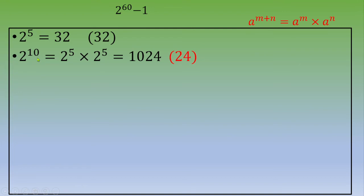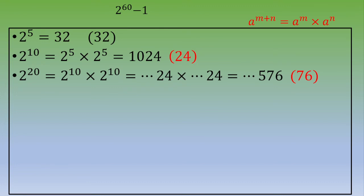Next step is to calculate 2 power 20. Following the same rule, this is 2 power 10 times 2 power 10 — a number ending in 24 times the same number ending in 24. The result is a number ending in 576, so we focus on the last two digits: 76.